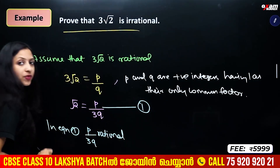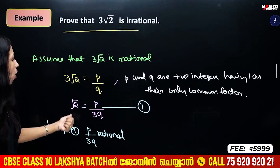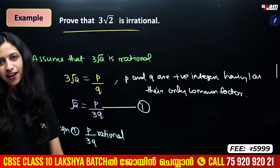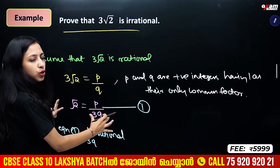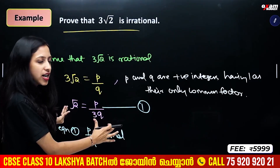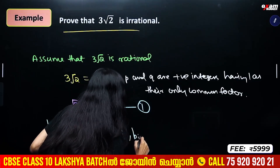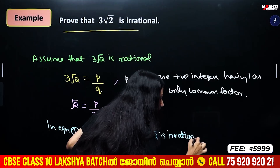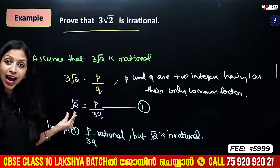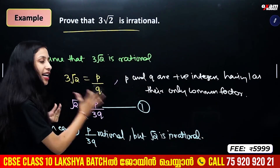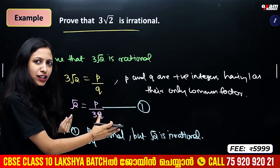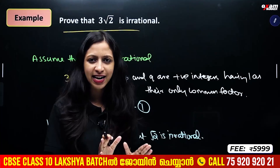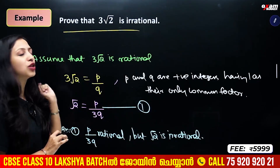The left-hand side is root 2, which is irrational. But the right-hand side is rational. So irrational equals rational, which is not possible. Therefore, our assumption is wrong.